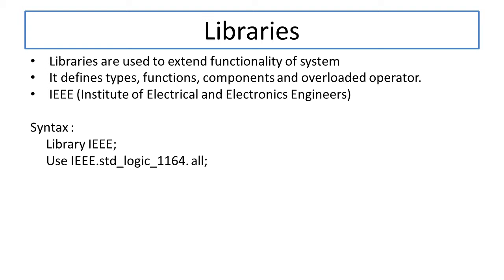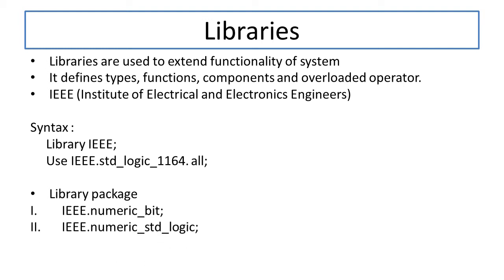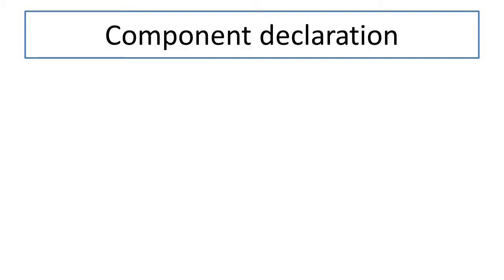We have two library packages. Number one is IEEE.numeric_bit — used when dealing with bit and bit_vector signal types. Number two is IEEE.numeric_std — used when dealing with std_logic and std_logic_vector, where signed and unsigned numbers are also defined. These two library packages are used for defining library elements in VHDL.